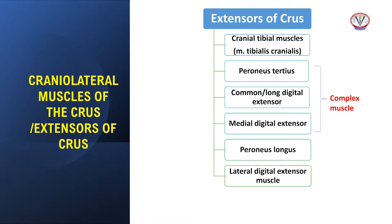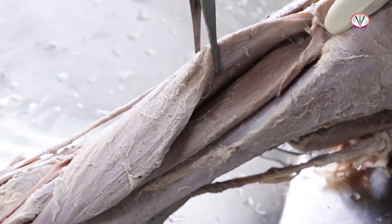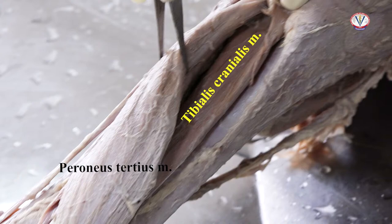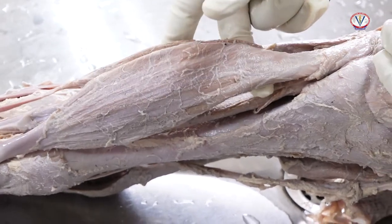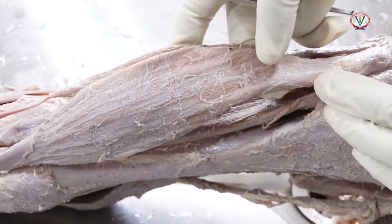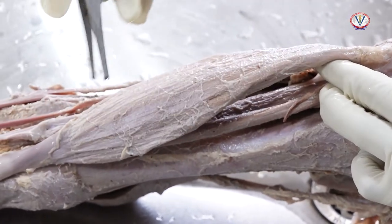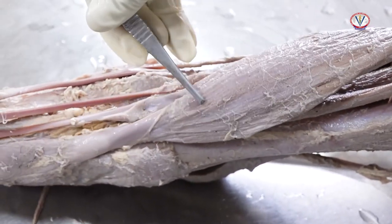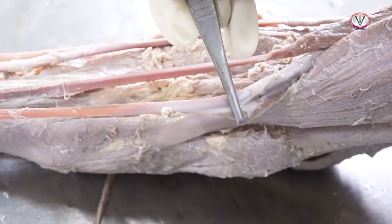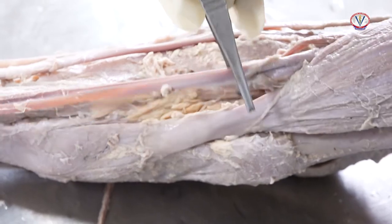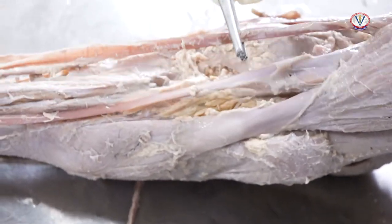The cranial tibial muscle is the most medial muscle on the cranial aspect of the tibia and is partly covered by peroneus tertius; it acts to flex the hock. The complex muscle group arises from the extensor fossa of the lateral condyle of the femur. Peroneus tertius is a strong fleshy muscle in the ox and inserts on the distal tarsus or proximal metatarsus.